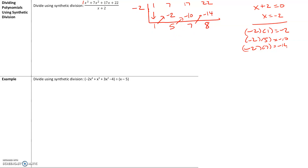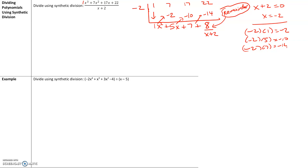Now let's think about what happened. We started off with x cubed and divided by x, so we drop down one degree. This becomes 1x squared, then plus 5x plus 7, and the remainder is 8 over x plus 2. The last term is always going to be the remainder. If the remainder is 0, that means x plus 2 is a factor of the dividend. But since it's not 0, x plus 2 is not a factor. So our answer is x squared plus 5x plus 7 plus 8 over x plus 2.